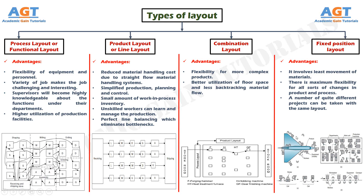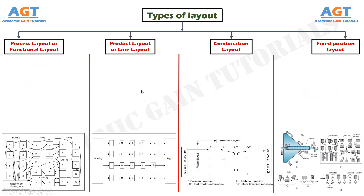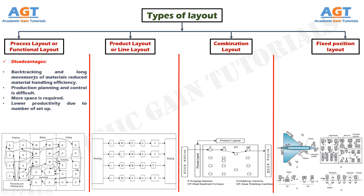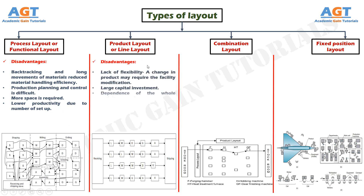Now, the disadvantages or limitations of using each of these layouts are as follows. Process layout or functional layout: backtracking and long movements of materials reduce material handling efficiency; production planning and control is difficult; more space is required; lower productivity due to number of setups. Product layout or line layout: lack of flexibility — a change in product may require facility modification; large capital investment; dependence of the whole activity on each part.